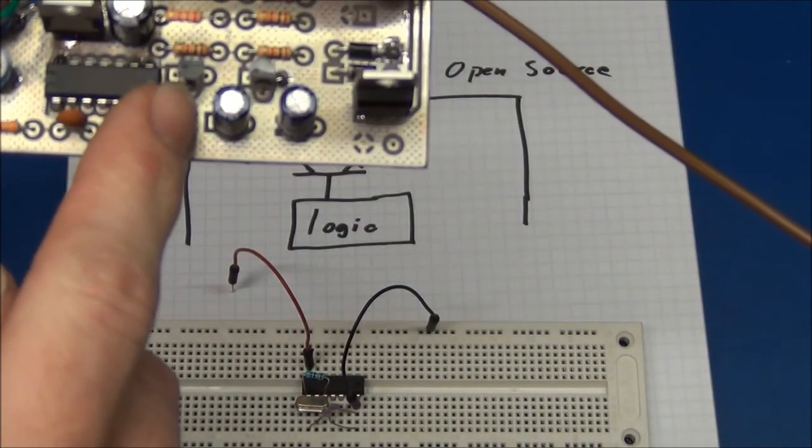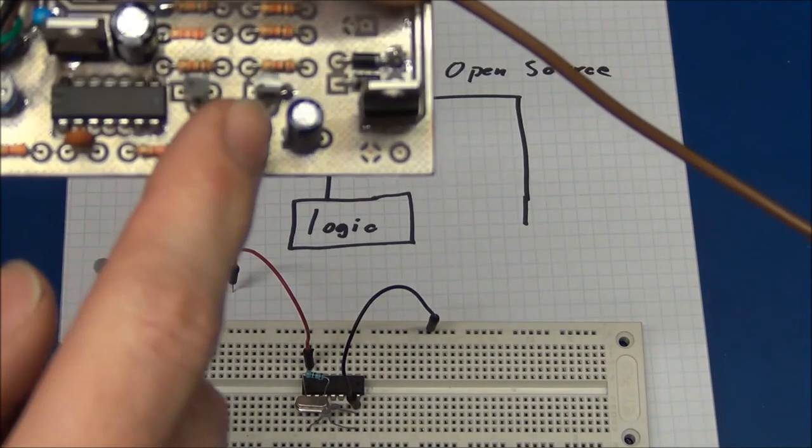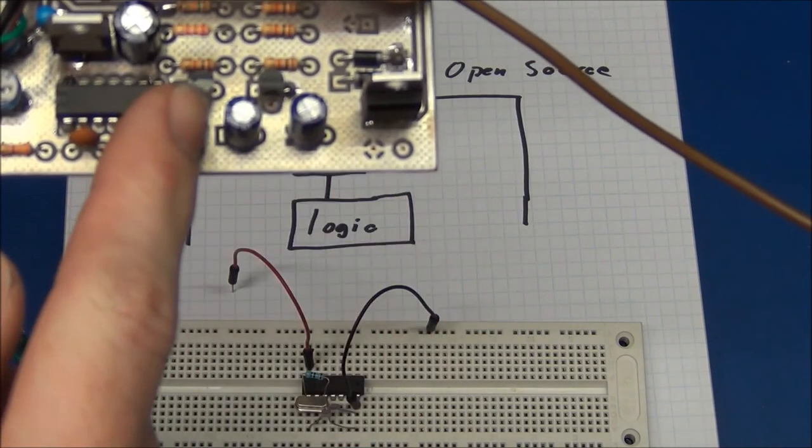And if I only use the NPN transistor, then I could indeed charge up the capacitor, but the charge will just stay there because it has nowhere to go when the transistor turns off.